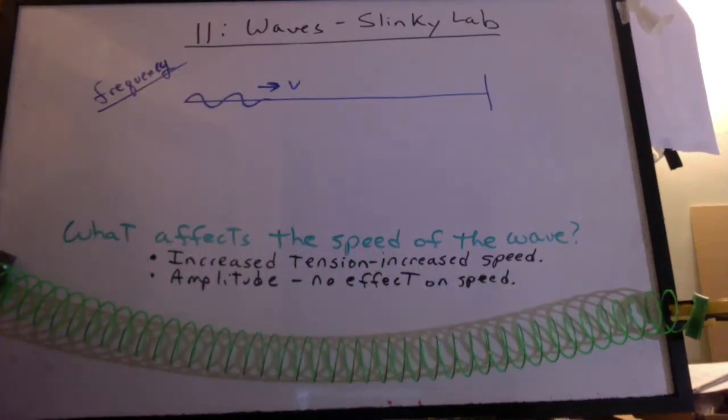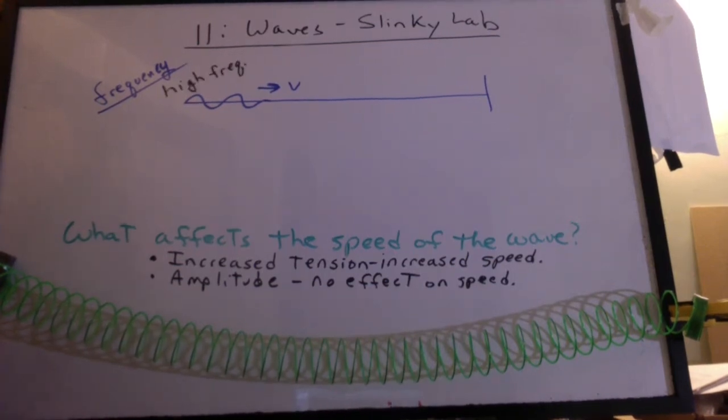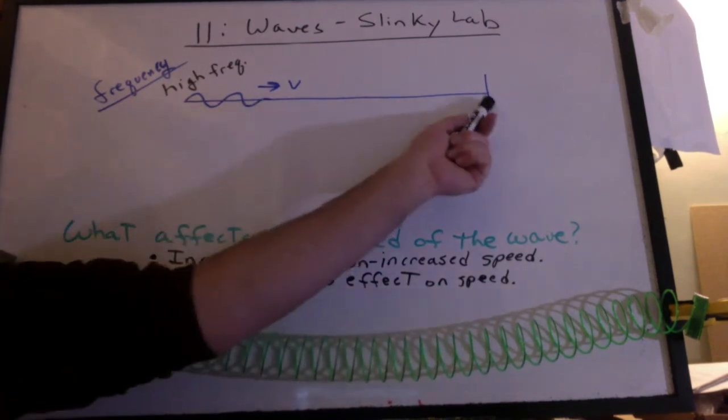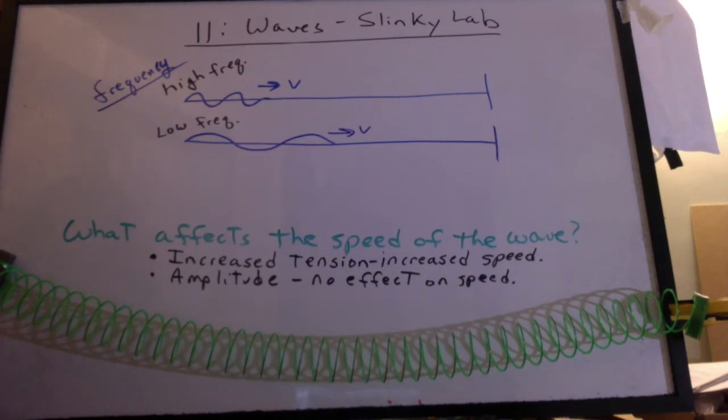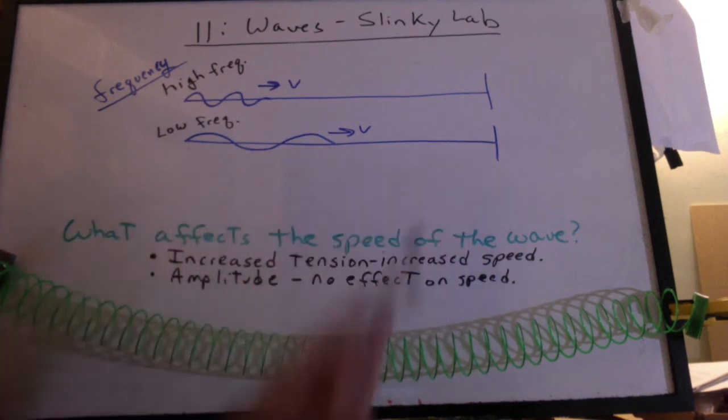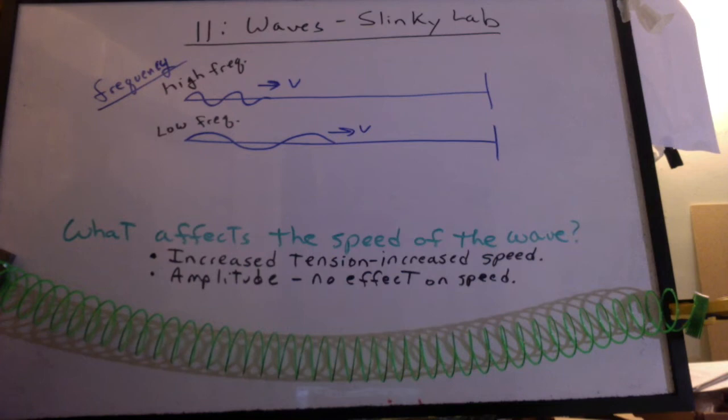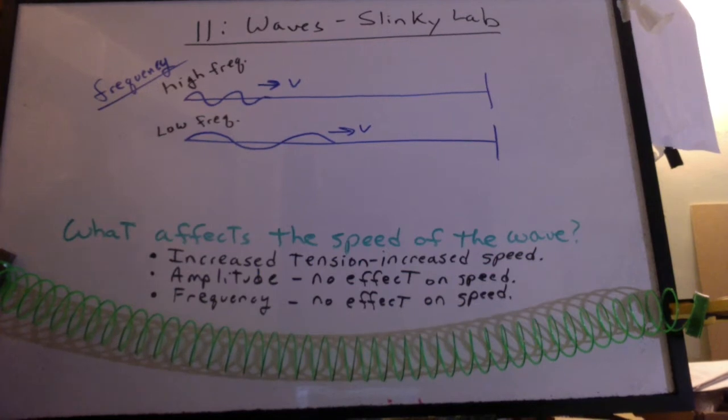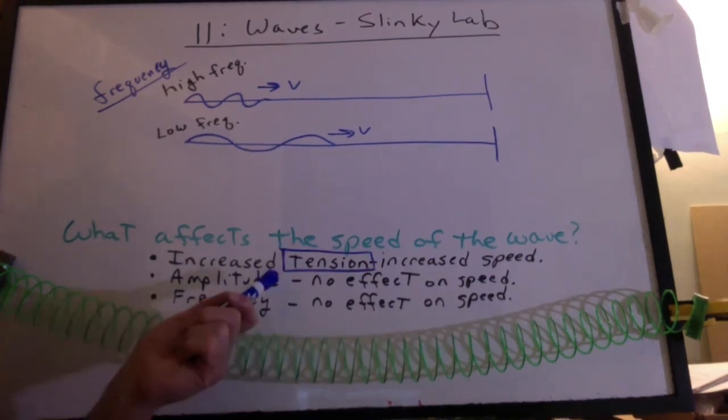Now, we can talk about frequency. You make a few waves real quick. That's high frequency. You can watch the video, and you can see the beginning of this wave reached the end in a certain amount of time. Then we tried it with low frequency. You move your hand back and forth a little slower. Time the wave to get there. Turned out, it was just about the same. The conclusion: frequency has no effect on the speed either. So at least for the Slinky Lab, tension is the only thing that's going to change that speed.